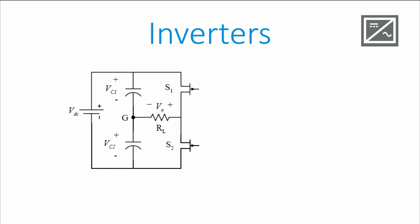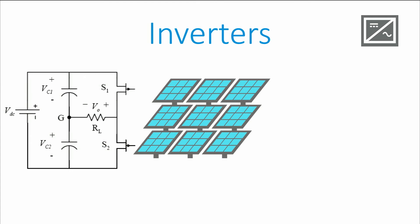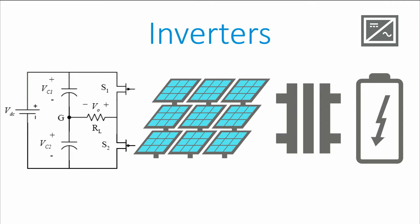Inverters are necessary when we want to connect a DC generation unit, such as a photovoltaic panel to an AC distribution network. Without these power converters, that connection to the grid wouldn't be possible. Other distributed generation units that require an inverter for their connection are fuel cells and batteries, among others.